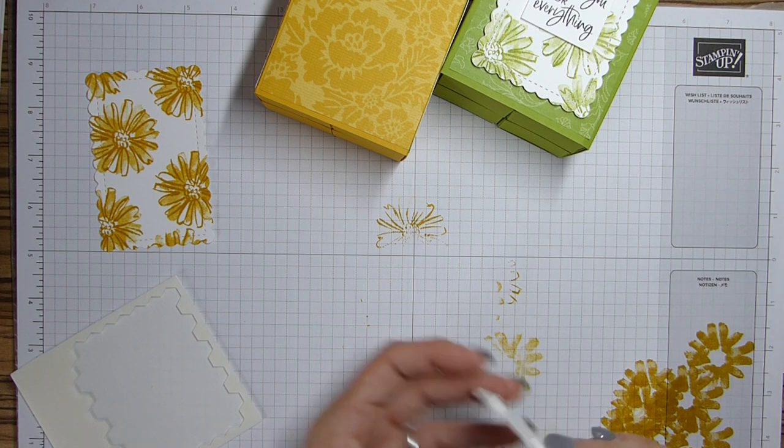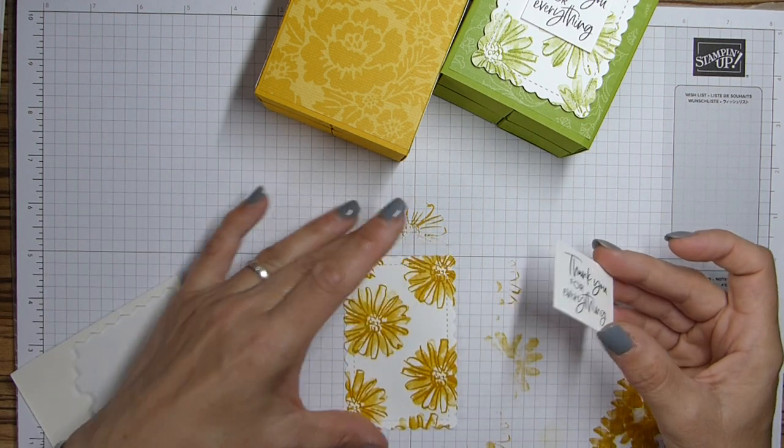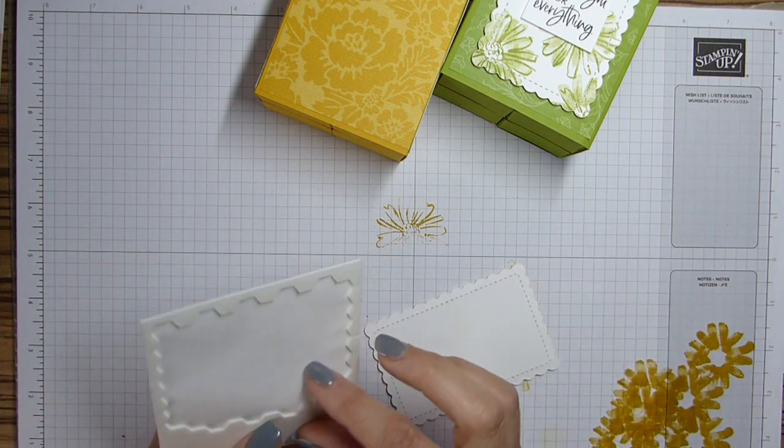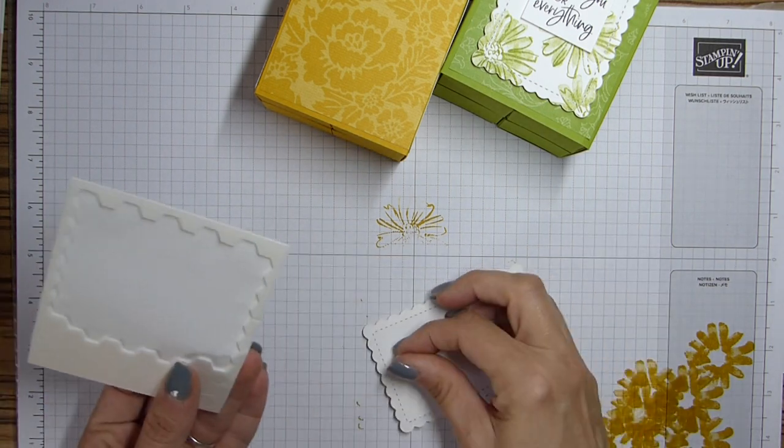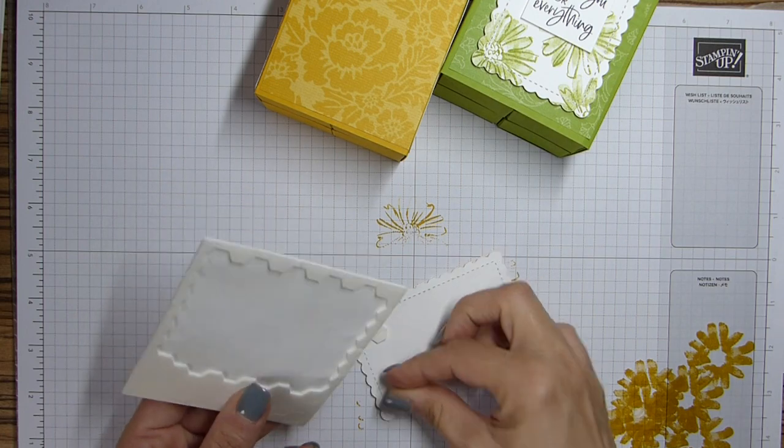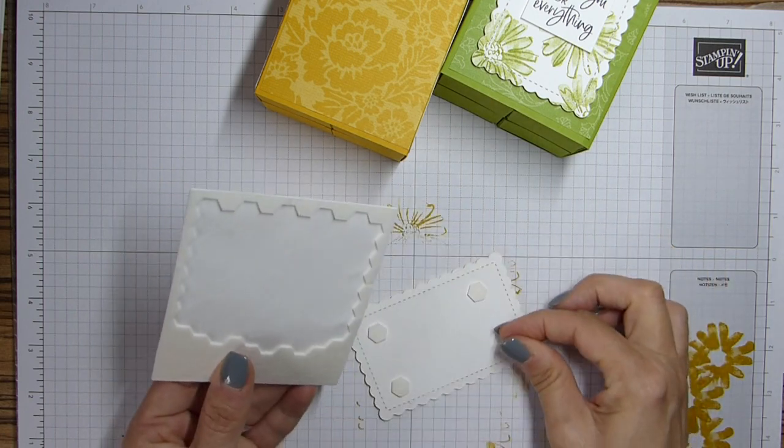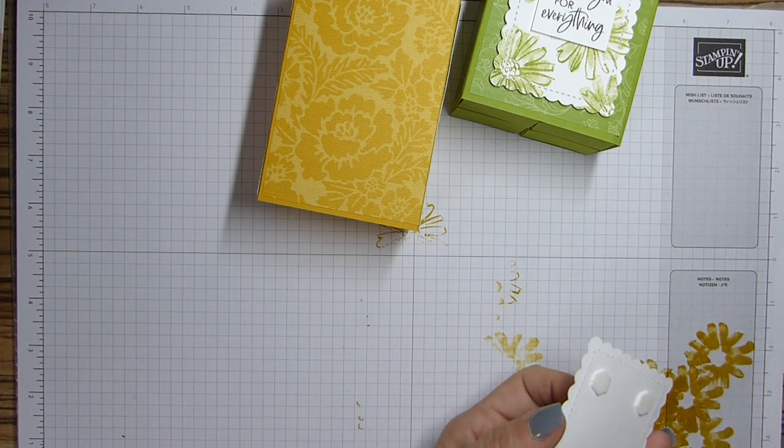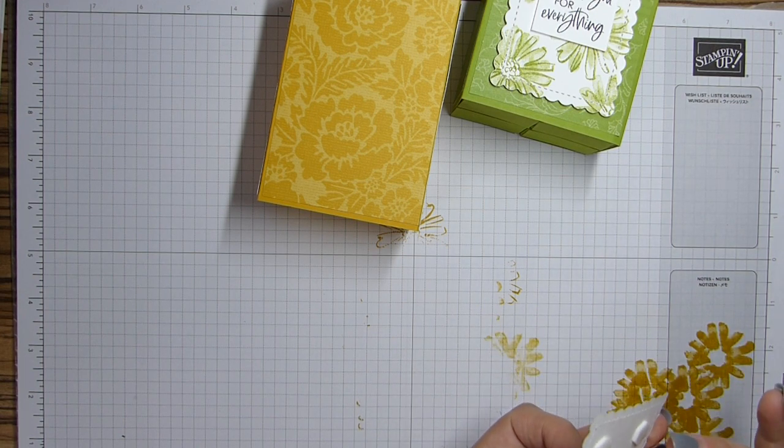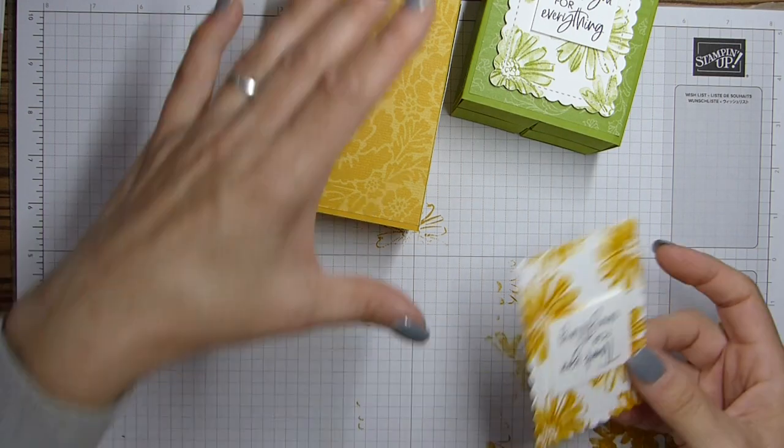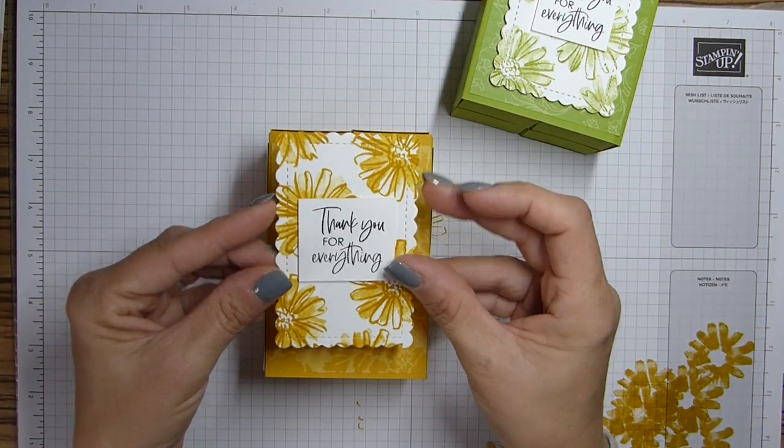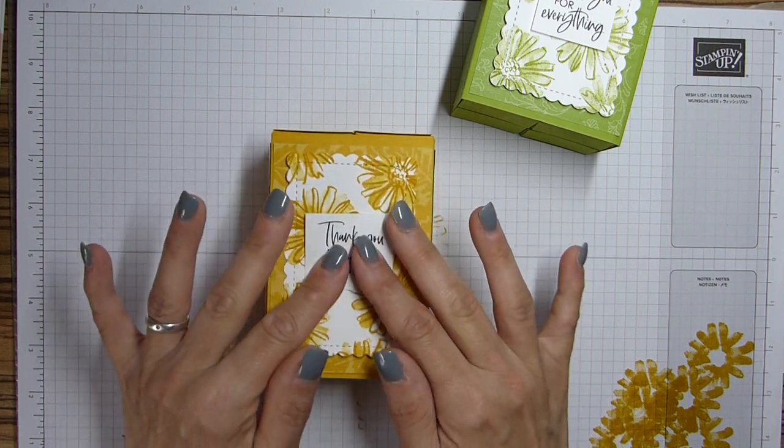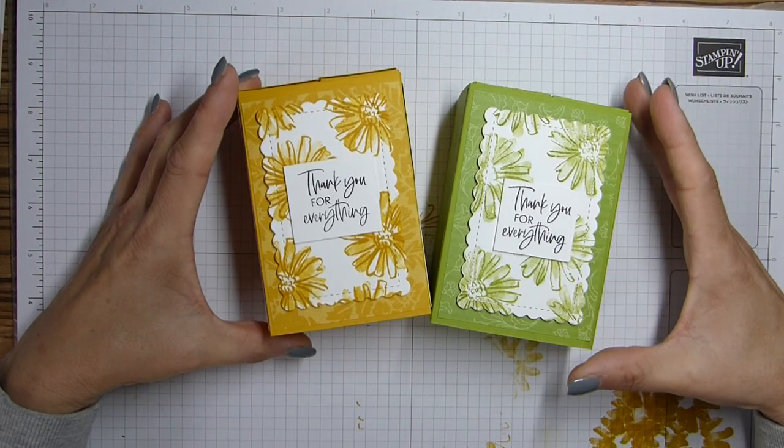And then that just goes on the centre. And then again, just a couple on the back. And these will sit on the front. And that is it. I mean, you can add as much or as little detail as you wish. That will just sit on the front. And I really like them. I think, and I love the colours. Granny apple green and crushed curry.